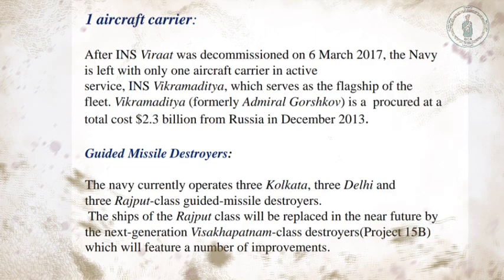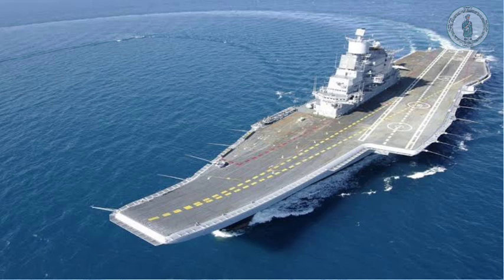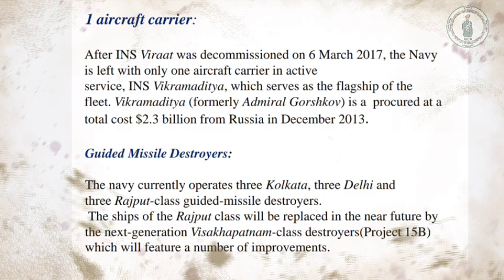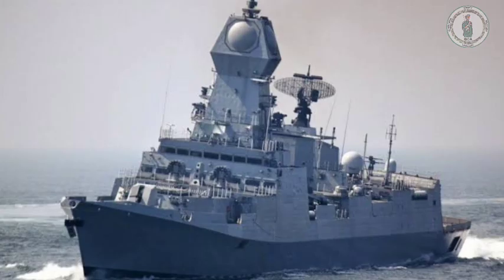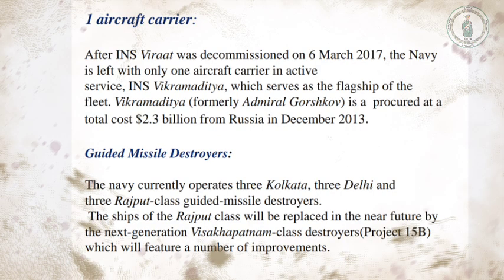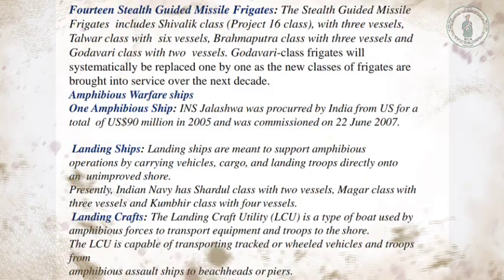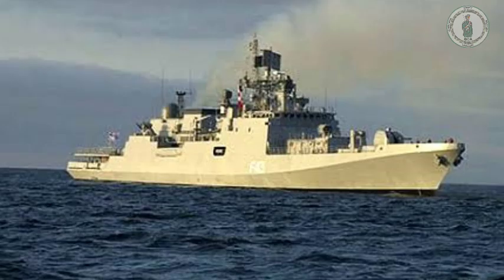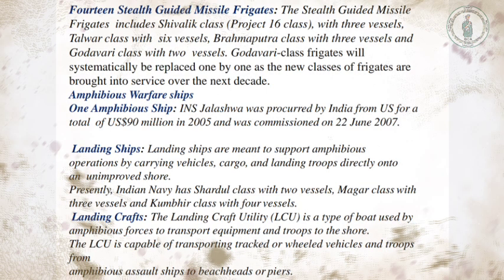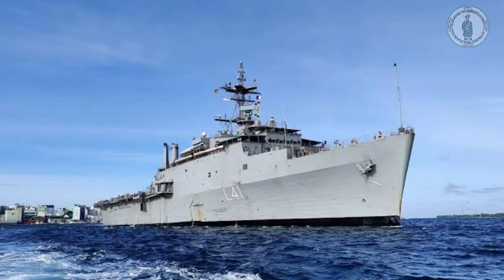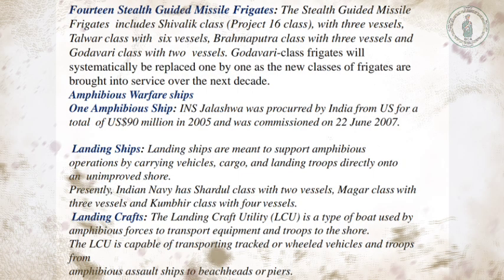After INS Viraat was decommissioned in March 2017, the only active aircraft carrier is INS Vikramaditya, which also serves as the flagship of the fleet. The Navy currently operates three Kolkata-class, three Delhi-class, and three Rajput-class guided missile destroyers; the Rajput class will be replaced by the Visakhapatnam-class destroyer. There are 14 stealth guided missile frigates including the Shivalik class (3 vessels), Talwar class (6), Brahmaputra class (3), and Godavari class (2). Amphibious ships include INS Jalashwa along with various landing ships and landing crafts.